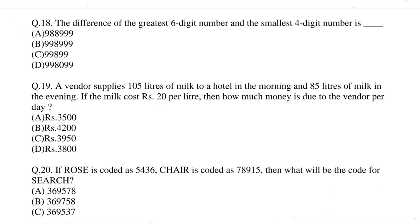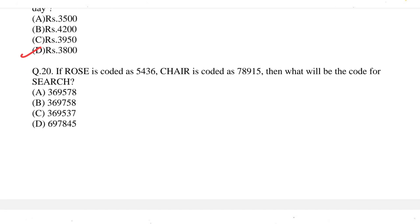Question 18: the difference between the greatest 6-digit number and the smallest 4-digit number is? The correct option is option B, 998,999. Question 19: a vendor supplies 105 litres of milk to a hotel in the morning and 85 litres in the evening. If the milk costs 20 per kg, how much money is due to the vendor per day? The correct option is option D, 3,800. Question 20: if ROSE is coded as 5436 and CHAIR is coded as 78915, what will be the code for SEARCH? The correct option is option A, 369578.